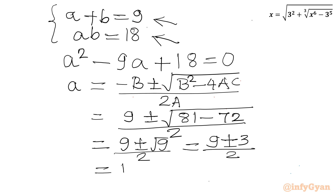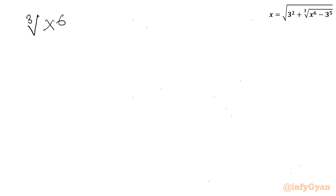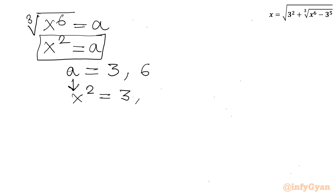With the plus sign: a = (9 + 3)/2 = 12/2 = 6. With the minus sign: a = (9 − 3)/2 = 6/2 = 3. So A = 6 and A = 3. Since our substitution was A = ∛(x⁶) = x², we replace A by x², giving x² = 3 and x² = 6.